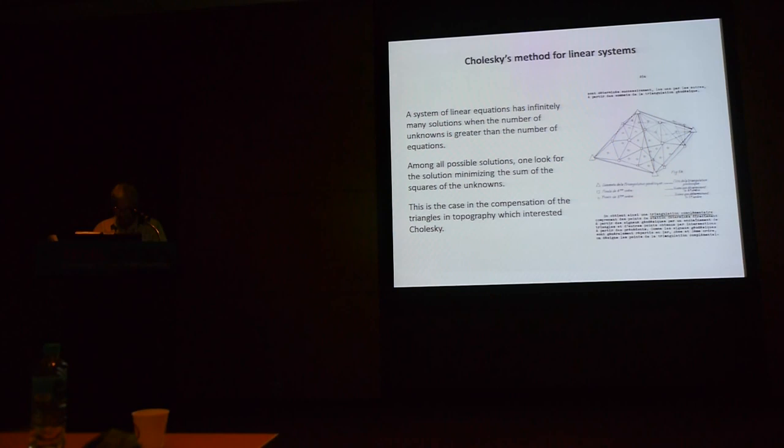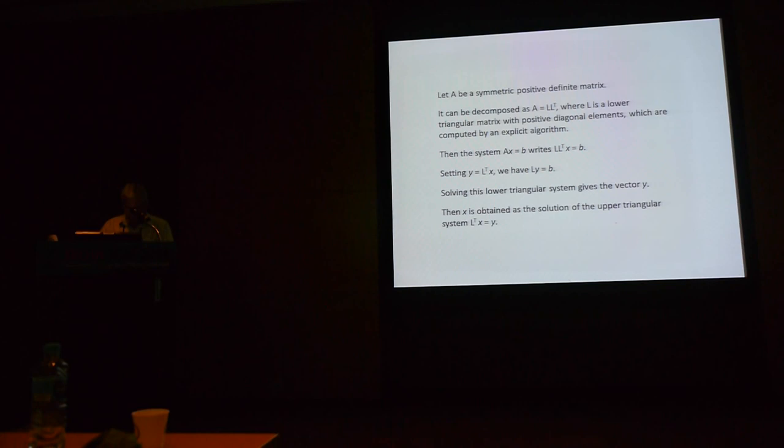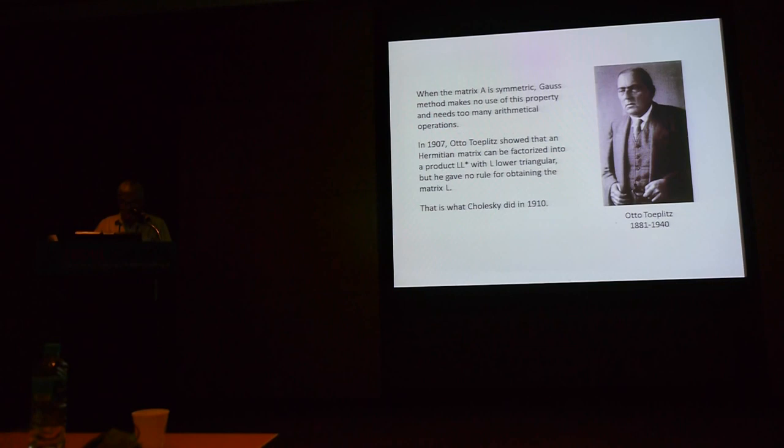Concerning his mathematical activity, Cholesky's method for linear systems is actually an important step in the history of numerical analysis. A system of linear equations has infinitely many solutions when the number of unknowns is greater than the number of equations. Among all possible solutions, one looks for the solutions minimizing the sum of the squares of the unknowns. This is the case in the adjustment of triangles in topography, the problem in which Cholesky was interested. As it is known, the least square method leads to a system with a symmetric positive definite matrix. I don't want to go into details for now, but the key of the method is to decompose the matrix A into the product of a matrix L, a lower triangular matrix with positive diagonal elements and the transposed matrix. And the fact is that the positive diagonal elements can be computed by an explicit algorithm.